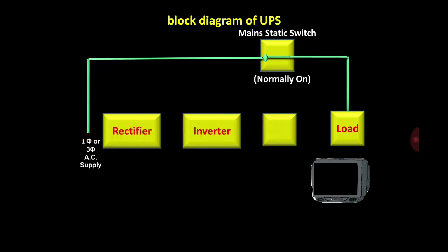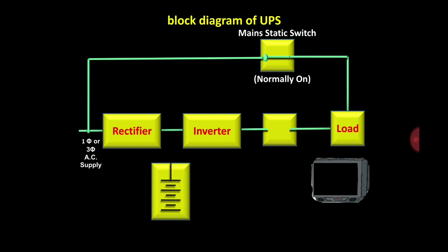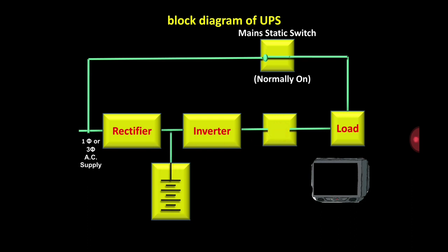So we have to use one rectifier, then an inverter, then one switch, and then a battery. We have connected the rectifier, then inverter, then one switch called the UPS static switch, and one battery.